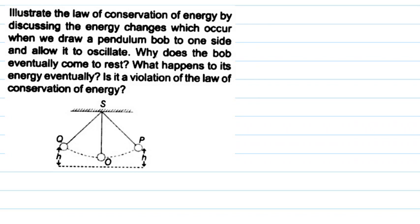Hello everyone, hope you are doing well. I am going to explain this question in this video. The question says: illustrate the law of conservation of energy by discussing the energy changes which occur when we draw a pendulum bob to one side and allow it to oscillate. Why does the bob eventually come to rest? What happens to its energy? Is it a violation of the law of conservation of energy? We have to explain it.